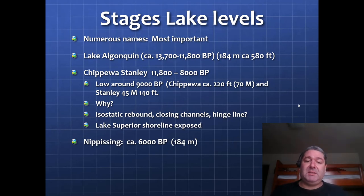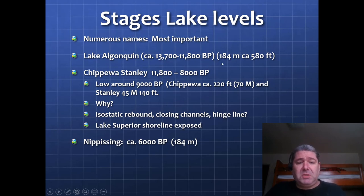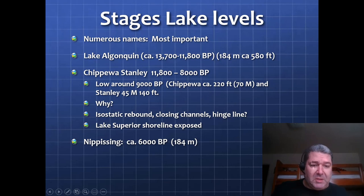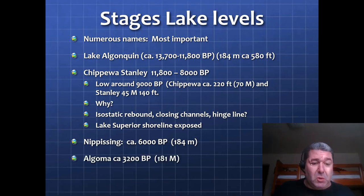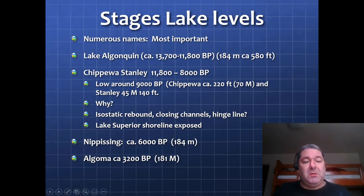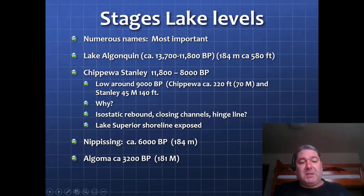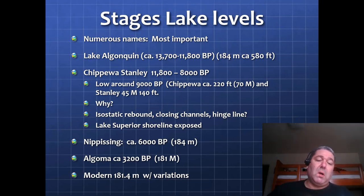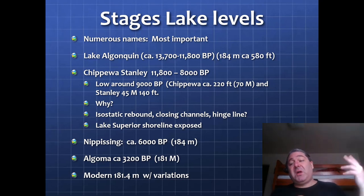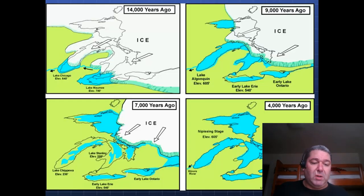Then we have the Lake Nipissing stage — a high stand again, similar to Lake Algonquin. The lakes went way back up due to isostatic rebound and the shutting off of one of the northern channels. Then we have Lake Algoma, around 3,200 years before present, at 181 meters — about the same level we have today. Our modern level is 181.4 meters, with some variations.